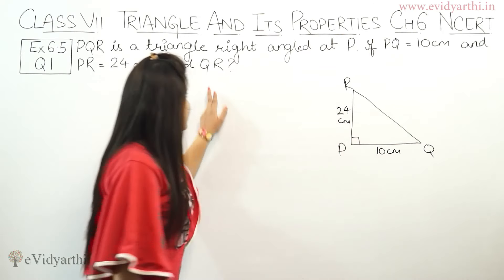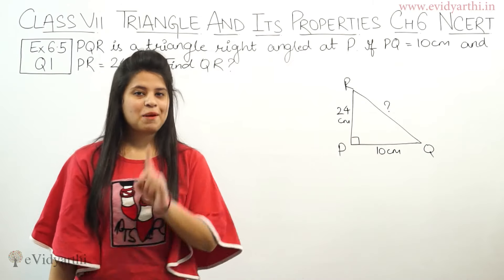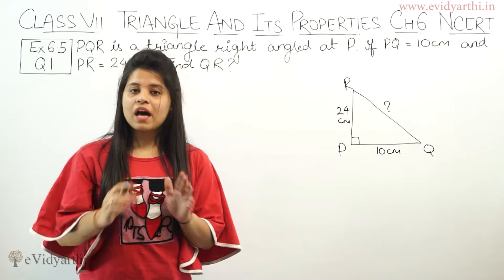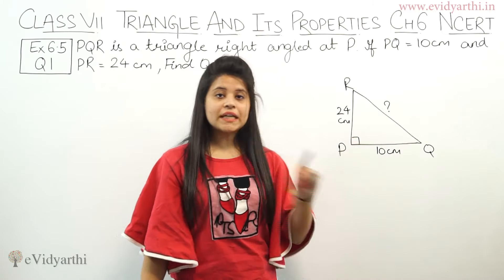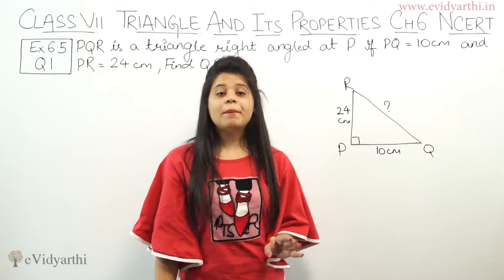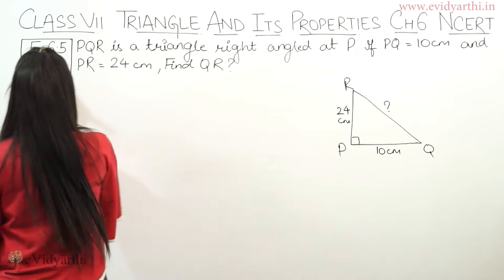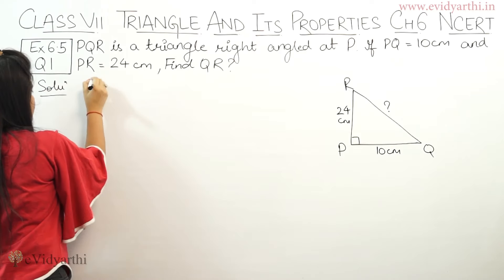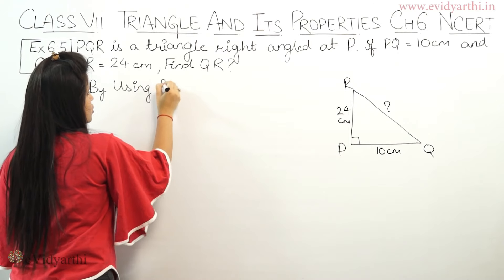But what do you find? QR. QR means this is our hypotenuse. That means you have to find the hypotenuse. It is right angled at P, so we will use Pythagoras theorem.